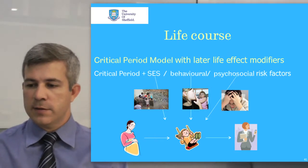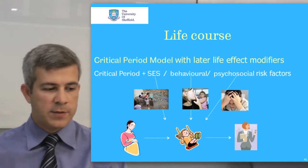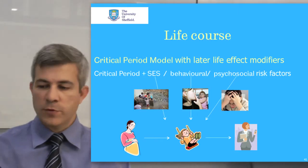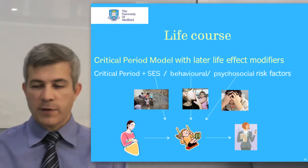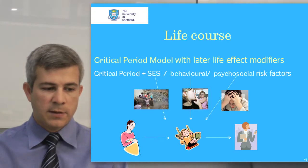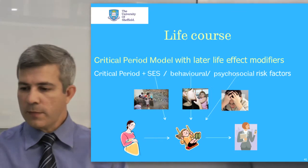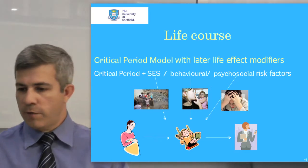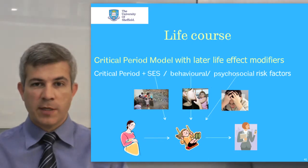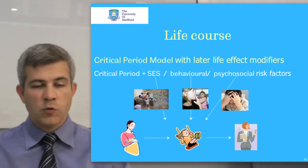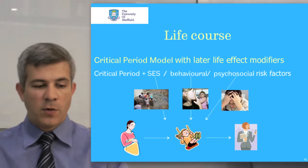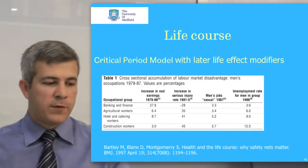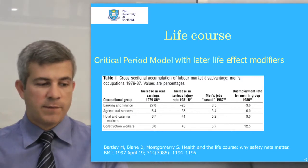The critical period model with later life effect modifiers can be considered an expanded version of the critical period model, and includes the possibility of exposures in early life interacting with later life exposures, thereby enhancing or decreasing the risk of chronic disease in later life. For instance, the risk of cardiovascular disease in mid-life among those with low birth weight could be due to the interactive effects of low birth weight on the motor system together with a more inactive lifestyle.